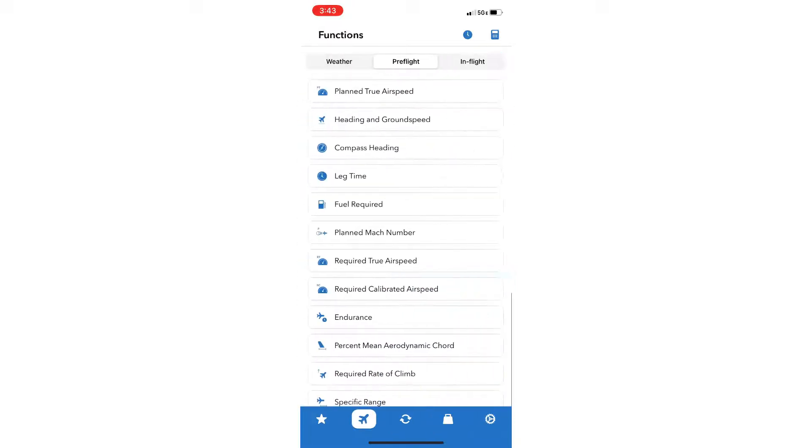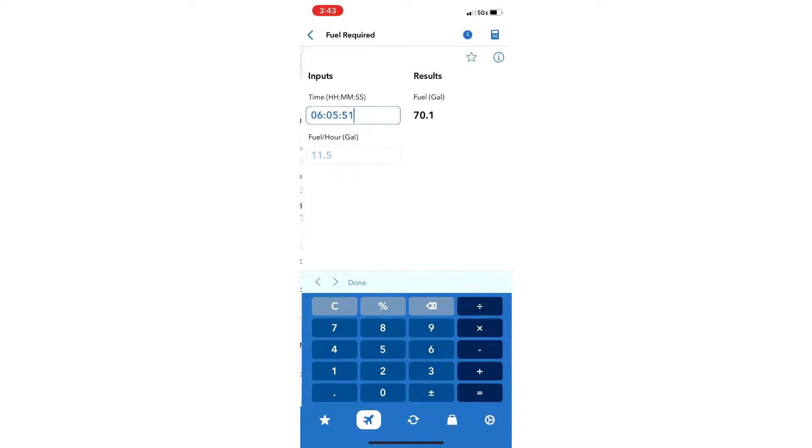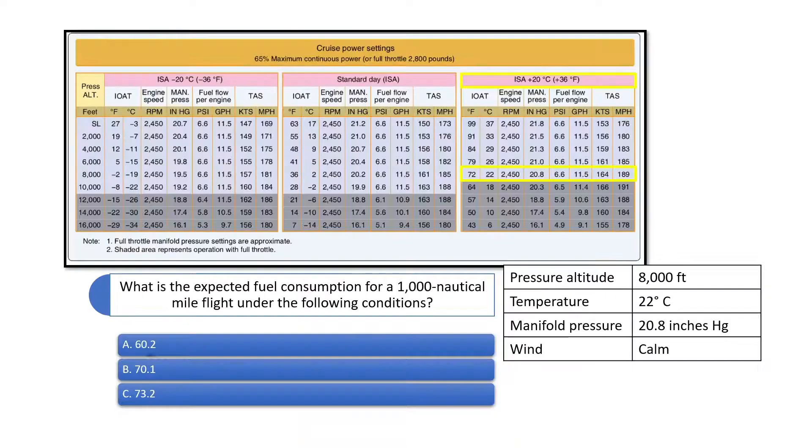Now use the fuel required function and enter the time en route of 6 hours, 5 minutes, 51 seconds, and fuel flow of 11.5 gallons per hour to find the expected fuel consumption of 70.1 gallons.